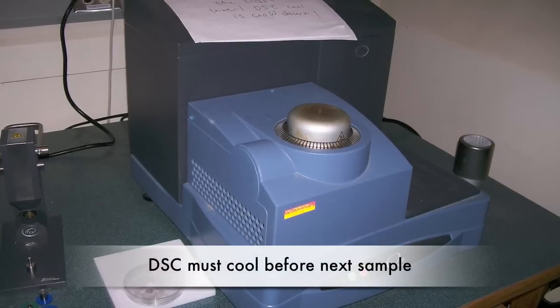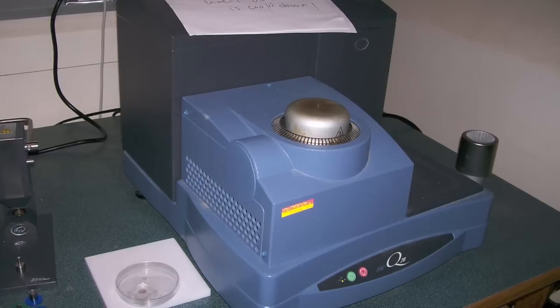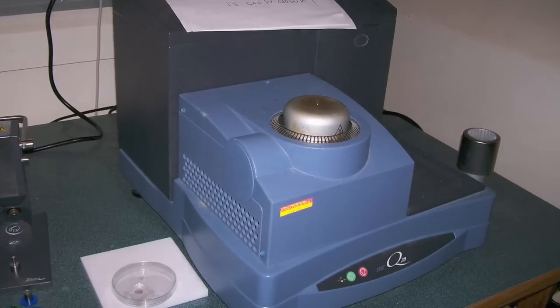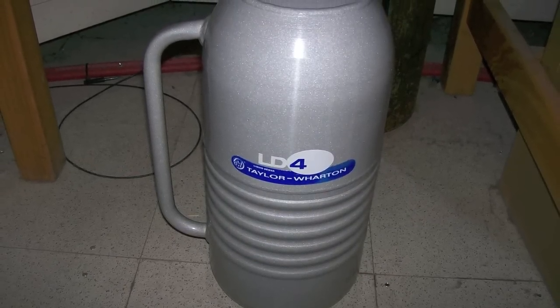To run another sample, the DSC must cool down. Since this DSC can only control the heating process, the instrument only cools very slowly. Liquid nitrogen can be added to accelerate this process or to cool the DSC for subroom temperature experiments.